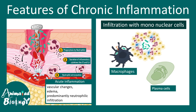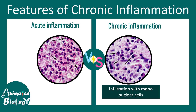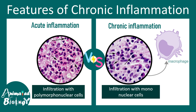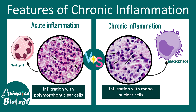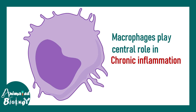Whereas the infiltration of mononuclear cells is a distinguishing feature of chronic inflammation. Macrophages and plasma cells are the key cell types that take part in chronic inflammation, and this can be seen in histological sections as well. In acute inflammation the major infiltrates are polymorphonuclear cells such as neutrophils, whereas in chronic inflammation it is macrophages and mononuclear cells that are the key determinants.